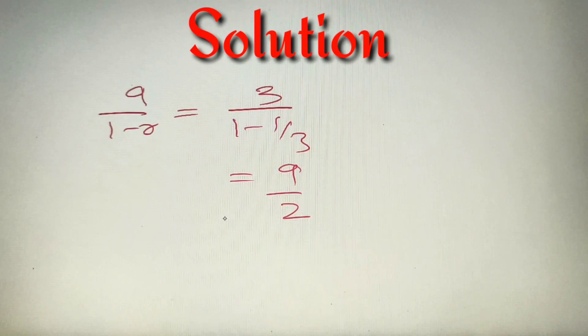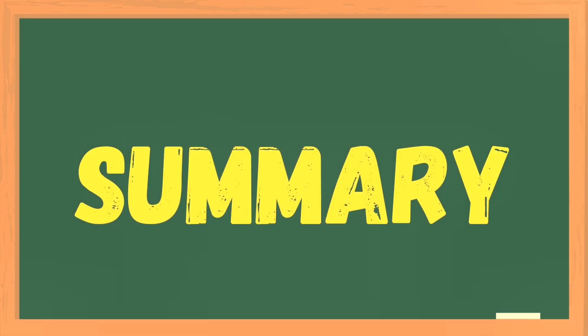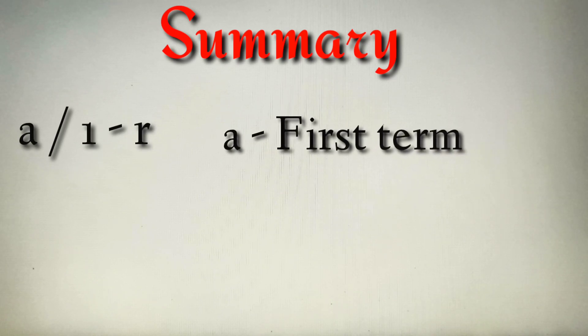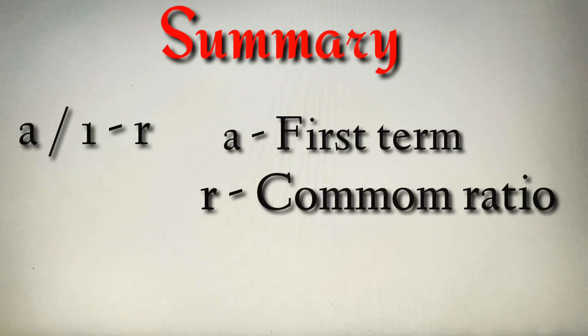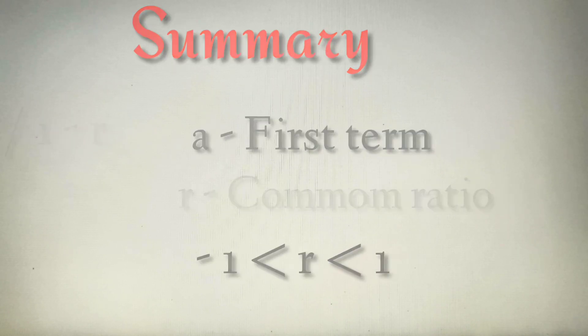To summarize: the sum of an infinite GP is given by the formula S∞ = a / (1 − r), where a is the first term and r is the common ratio. The restriction is that r must lie between −1 and 1 in order to use this formula.